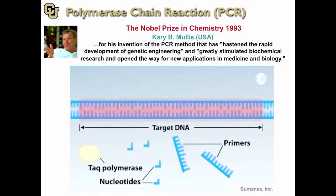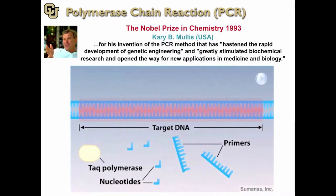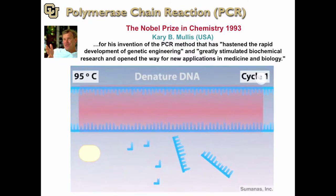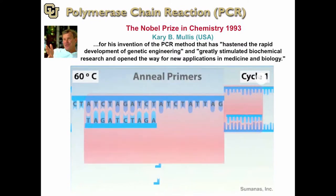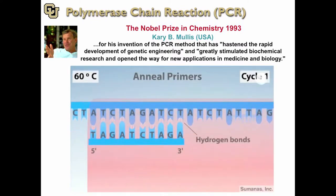A PCR reaction lasts several hours and typically consists of 20 to 35 repeating cycles. A cycle begins by heating the reaction mixture to 95 degrees Celsius — the heat denatures the DNA, breaking the hydrogen bonds that hold the strands together. After denaturing, the temperature is reduced to around 60 degrees so that the primers can form hydrogen bonds, or anneal, with their complementary sequences in the target DNA, following base pairing rules: adenine pairs with thymine, and cytosine pairs with guanine.